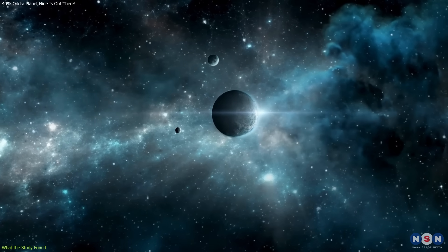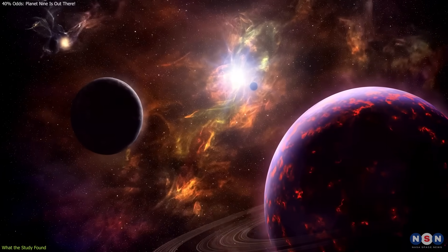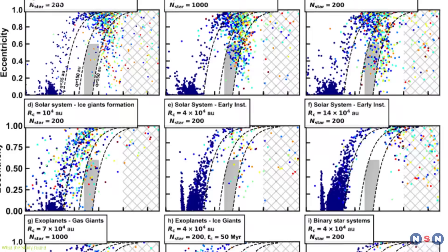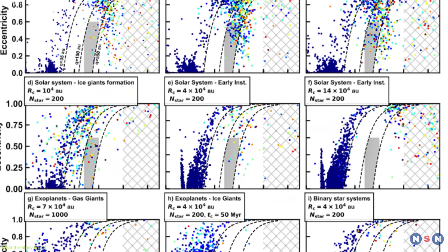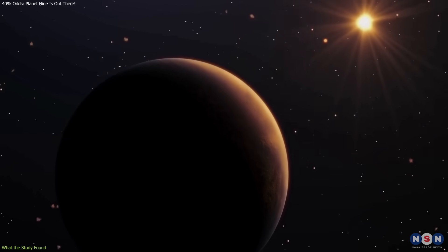Among systems with features similar to our own, such as high stellar metallicity and the presence of large gas giants, about 40% of the simulations produced a wide-orbit planet that remained gravitationally bound at extreme distances.